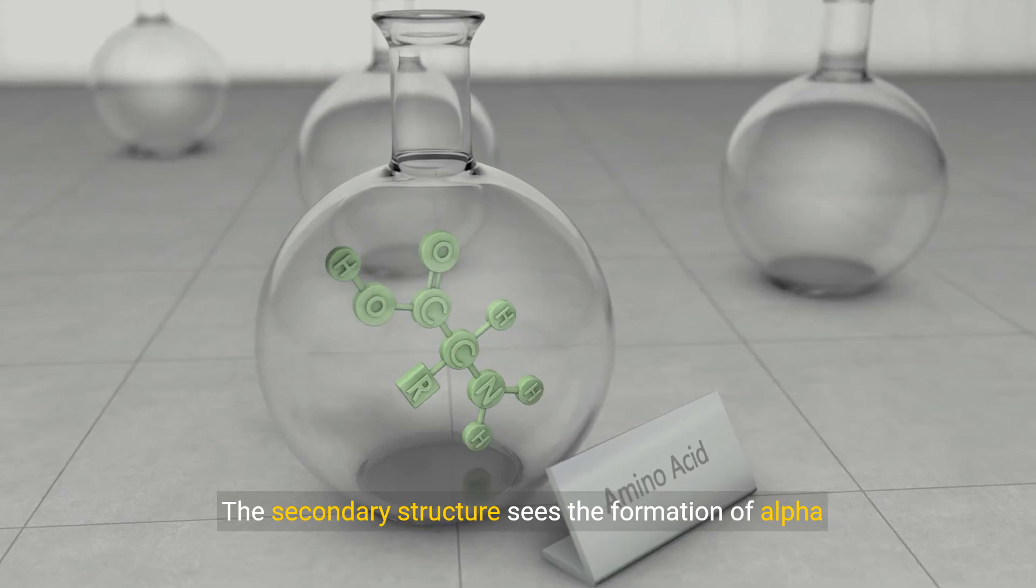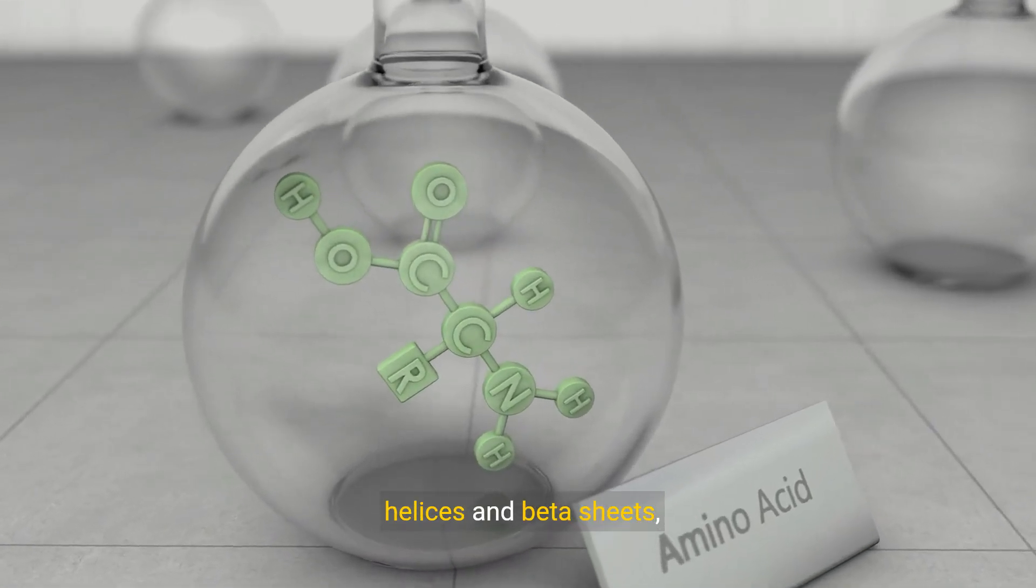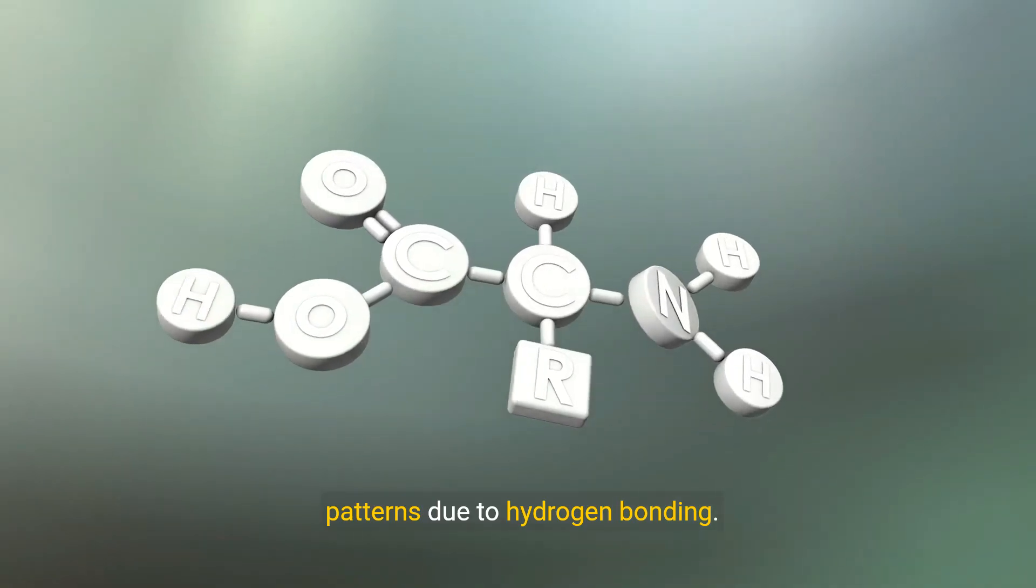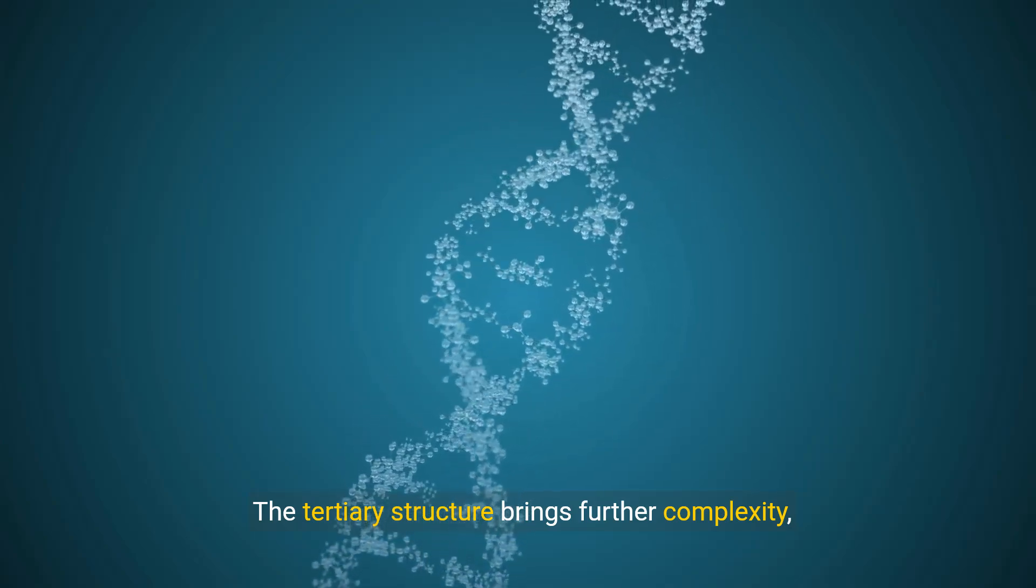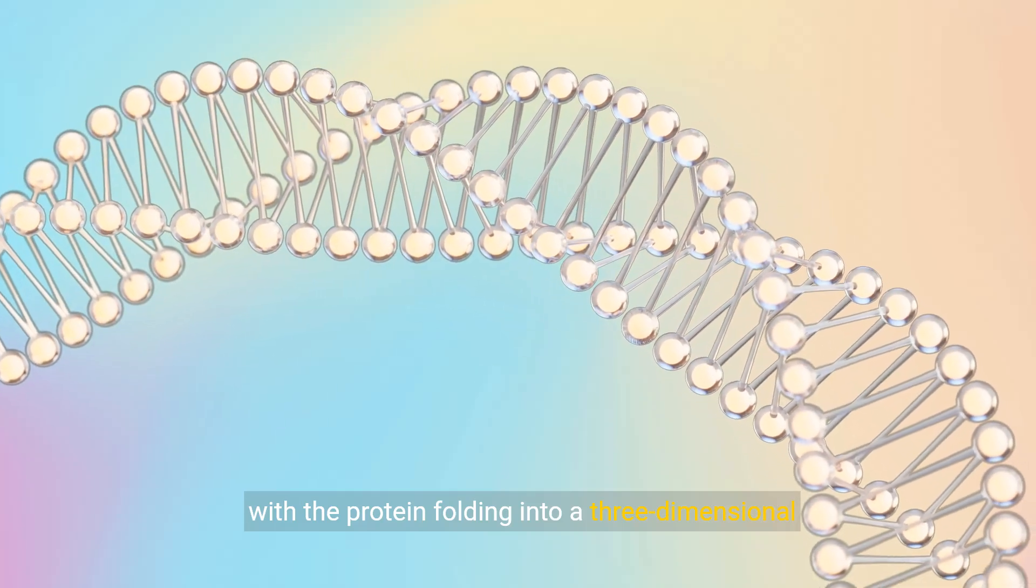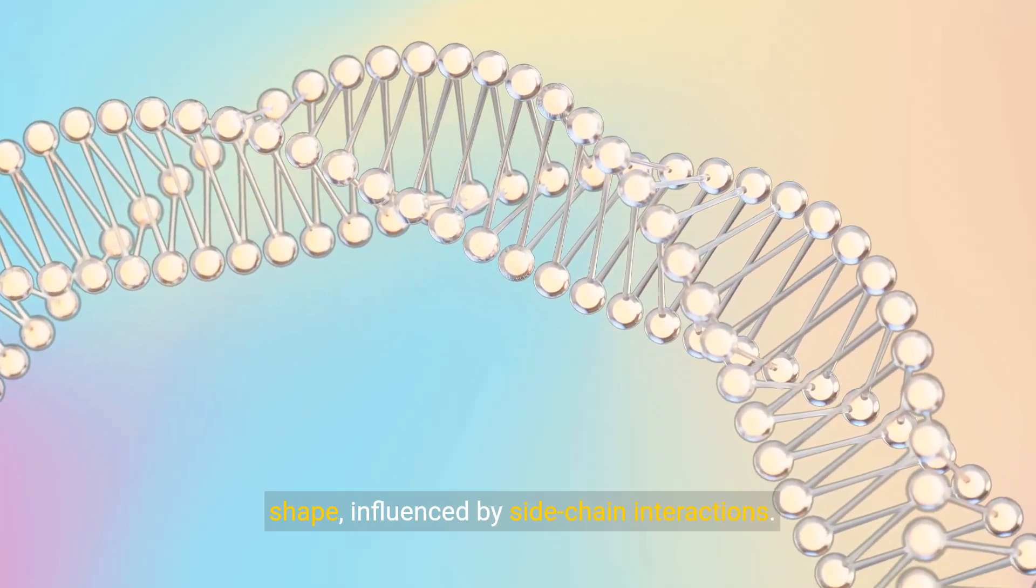The secondary structure sees the formation of alpha helices and beta sheets, patterns due to hydrogen bonding. The tertiary structure brings further complexity, with the protein folding into a three-dimensional shape, influenced by side-chain interactions.